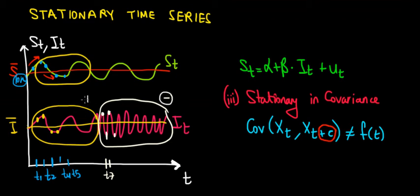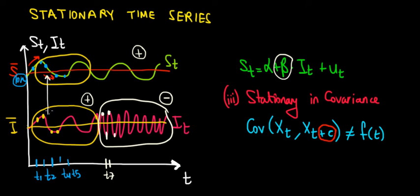So for inventory we have a negative covariance in the second portion and a positive covariance in the first, whereas for the dependent variable (sales) we have a positive covariance across the entire time series. This non-stationarity in covariance means this variable cannot be used in a regression model for time series, because the slope coefficient will not be constant across time. Over the first portion, the relationship between inventory and sales might have a magnitude of approximately 2.